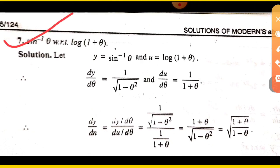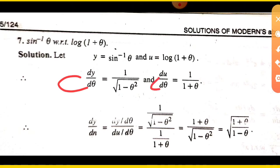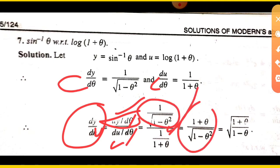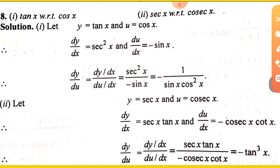Next: differentiate sin inverse theta with respect to log(1 + theta). y is sin inverse theta, so dy upon d theta is 1 upon root(1 minus theta squared). u is log(1 + theta), so du upon d theta is 1 upon (1 + theta). Then dy upon du equals dy upon d theta divided by du upon d theta — the d theta cancels. So this value is 1 upon root(1 minus theta squared), divided by 1 upon (1 + theta). Then simplify to get the answer.